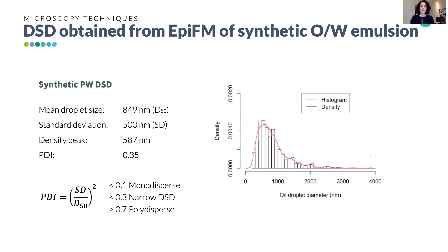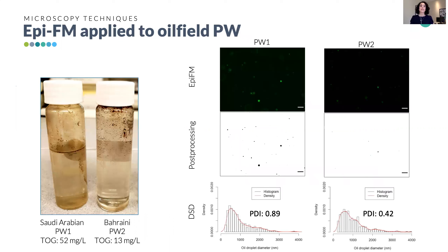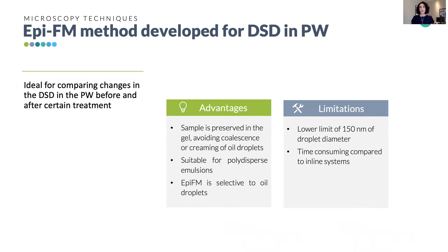With the protocol defined, we applied it to real oil-field produced water samples: Saudi Arabian PW1 on the left and Bahraini PW2 on the right. In PW2 we found a lower population of oil droplets due to its lower oil content. Both oil-field produced waters had a peak around 500 nanometers with a broader distribution compared to the synthetic emulsion. PW1 had a higher PDI of 0.89, indicating a polydispersed distribution that makes the sample unsuitable for methods such as dynamic light scattering.